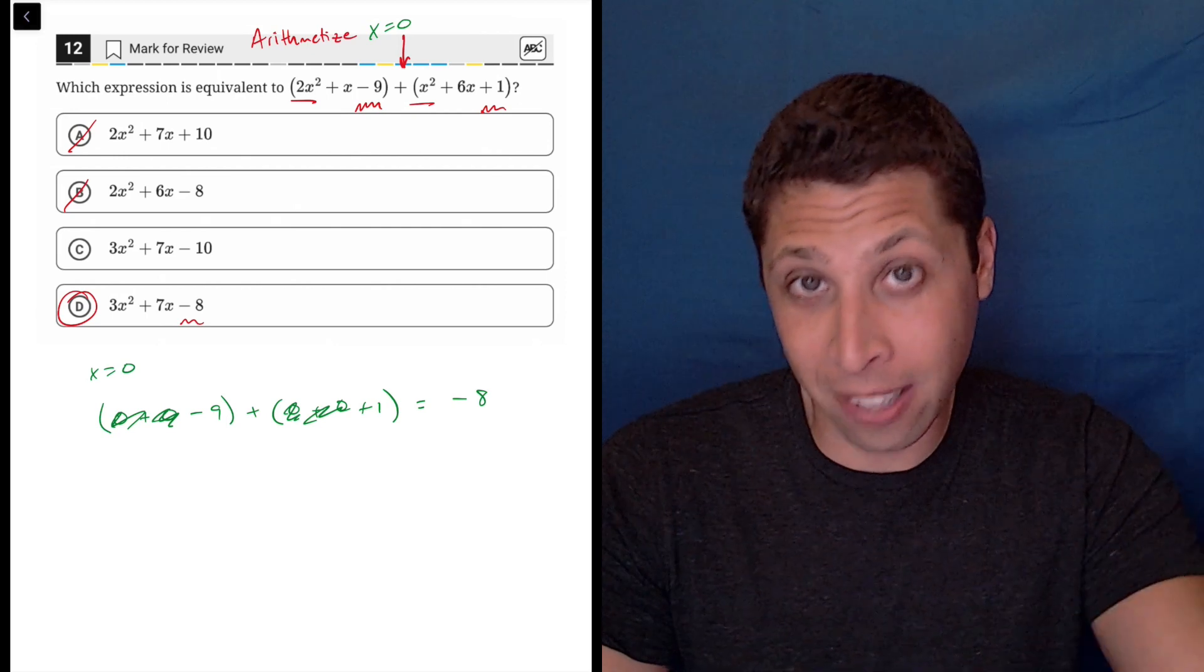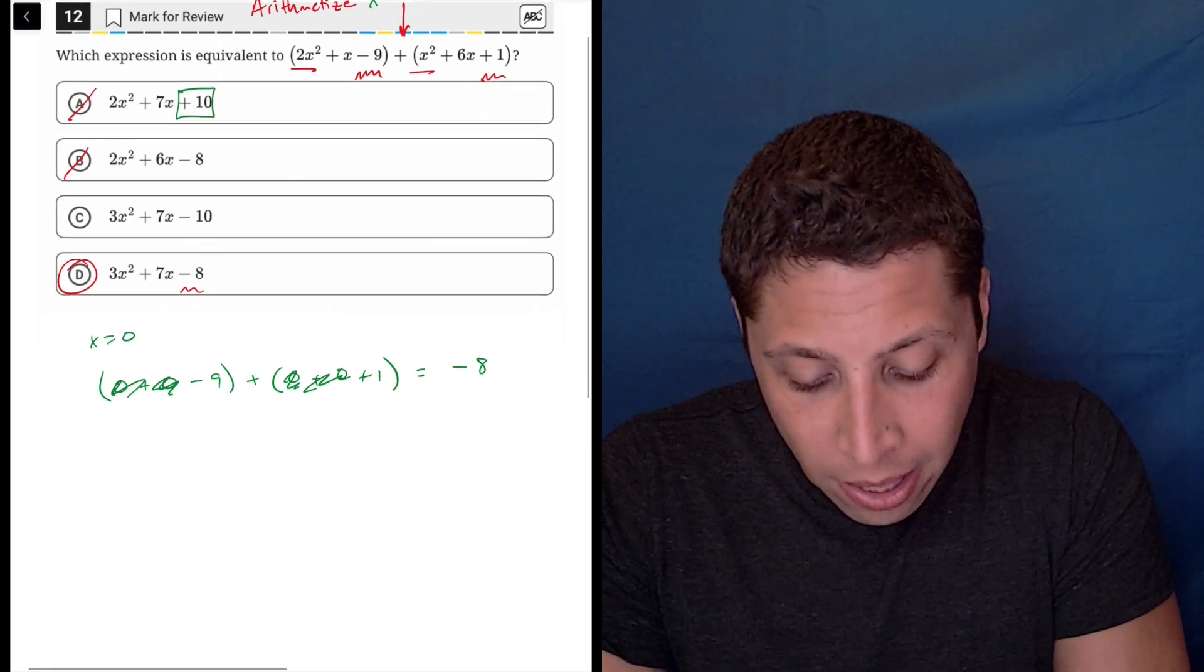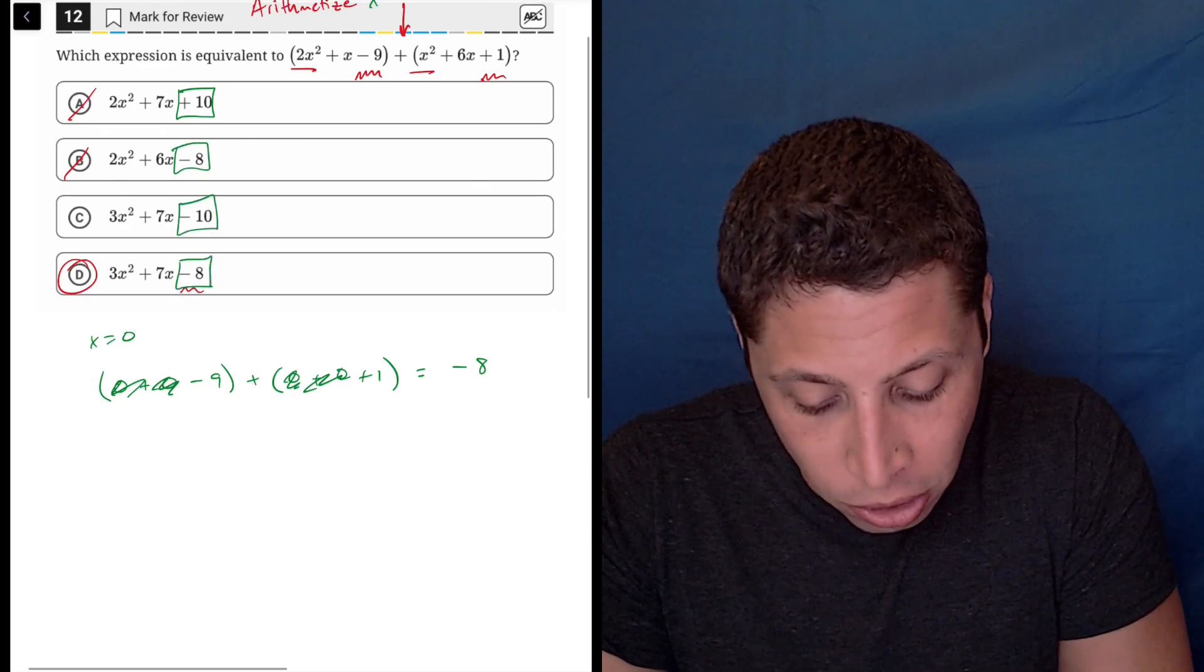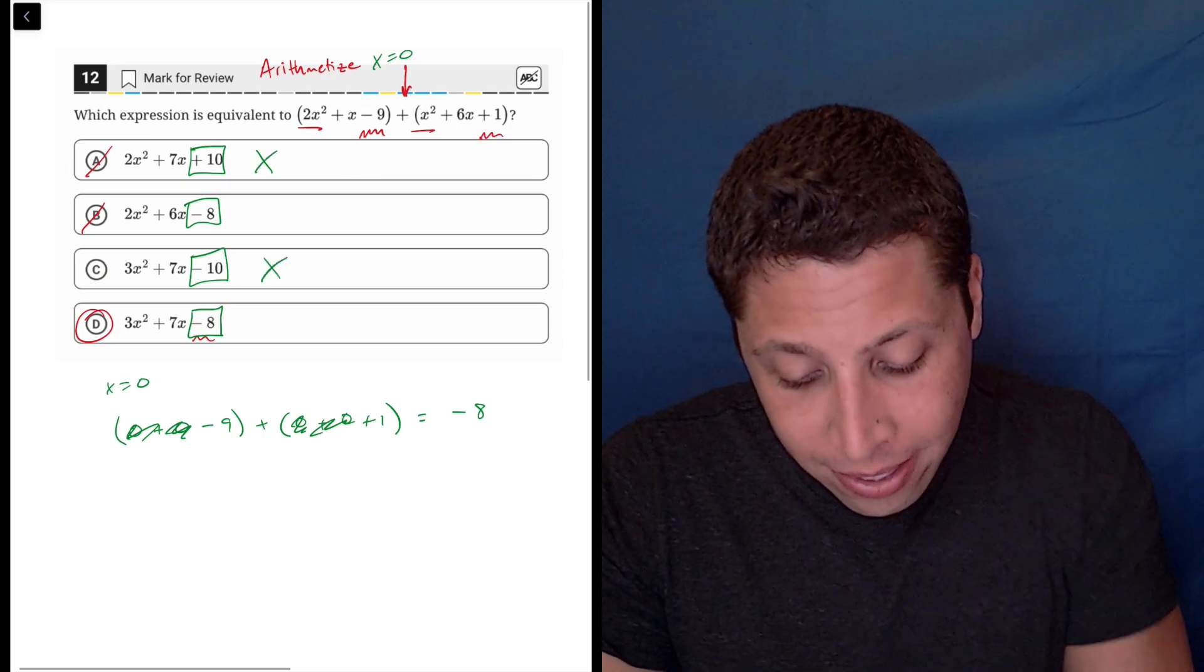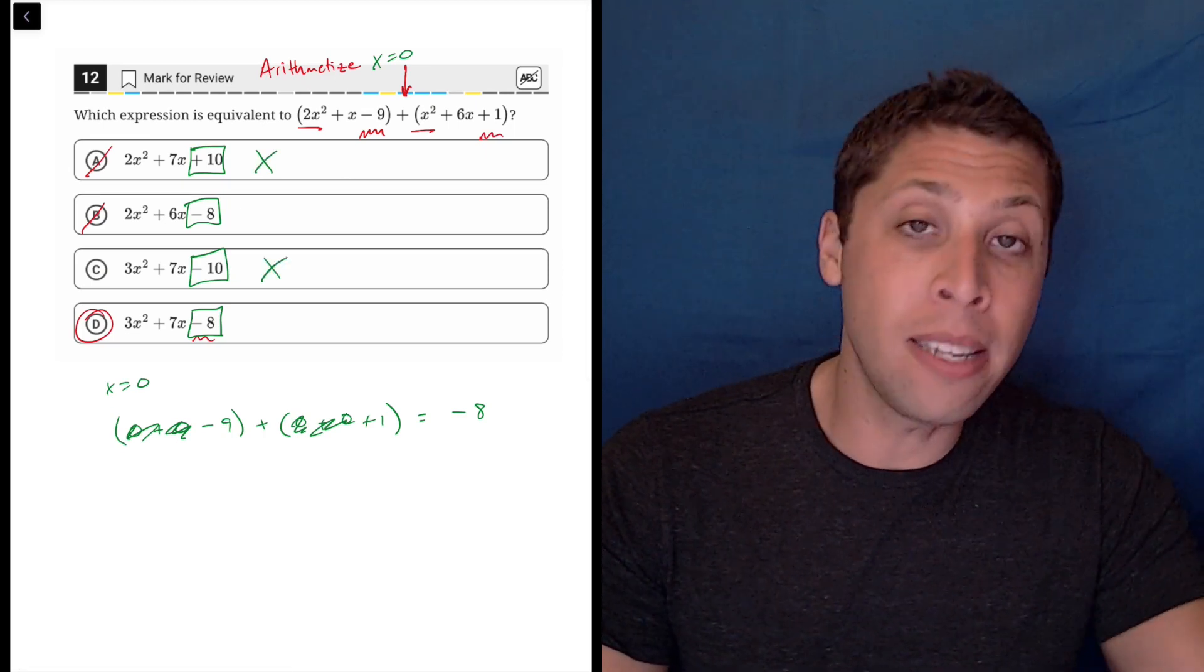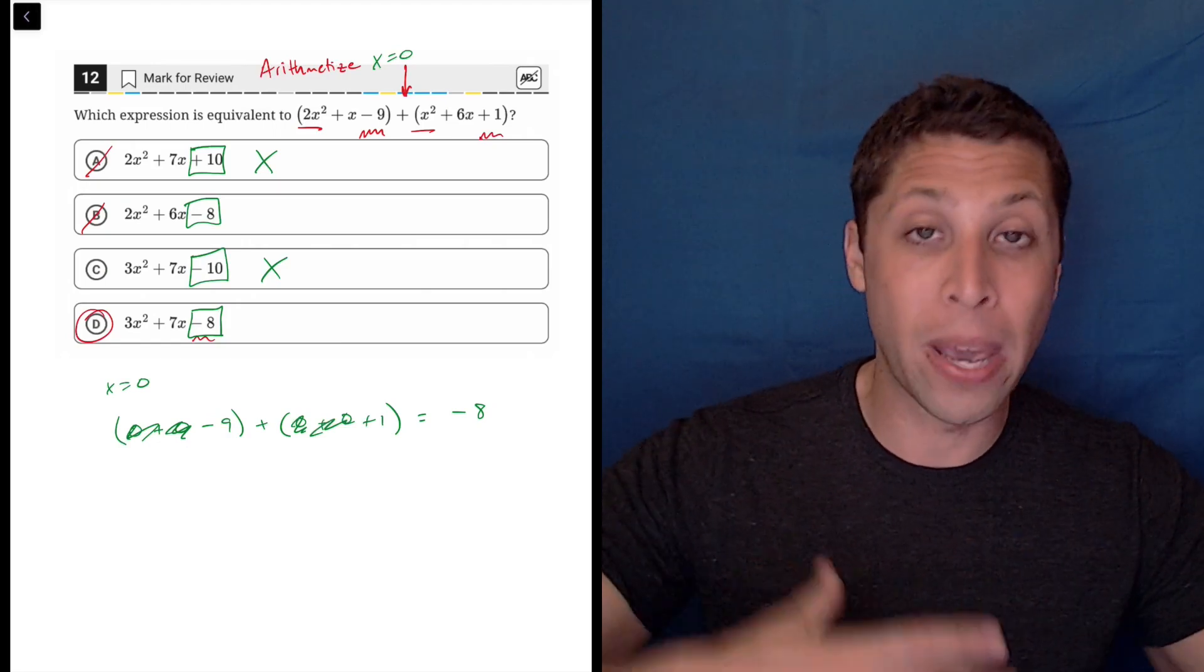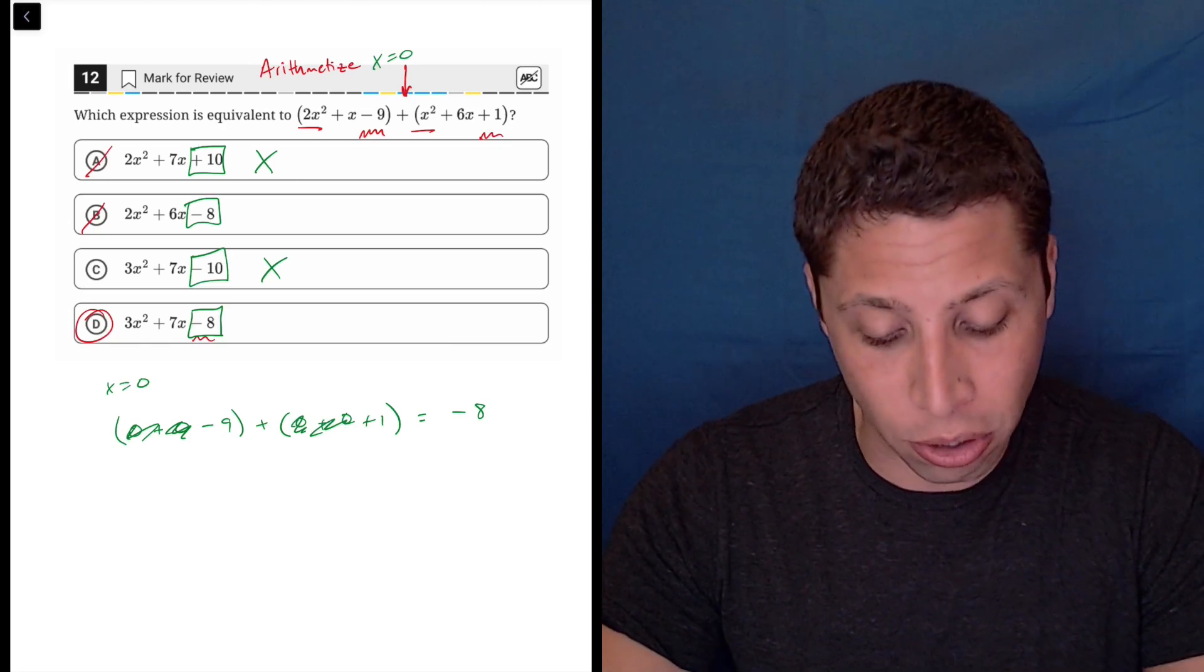And because it's 0, the same thing is going to happen in the choices. We're going to be left with only the last term because all of the other pieces are going to fall away. Now that's good because it gets rid of a and c, but both b and d work. And this is a very common thing that happens with arithmetize is we pick a number that's really convenient, but it sometimes works with multiple answers. And that's okay.